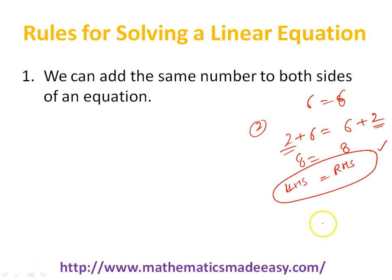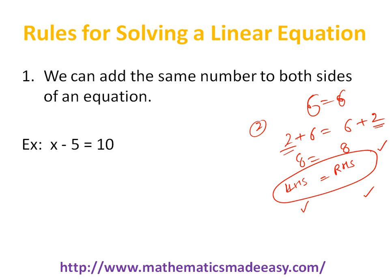After adding any number to both the left hand side and the right hand side, the equation becomes unchanged. It is still satisfied — left hand side still equals right hand side. So I can add any number to both sides and the equation will not change. For example, suppose I have the equation x minus 5 equal to 10 and I need to figure out the value of x. So if I add 5 to both sides...